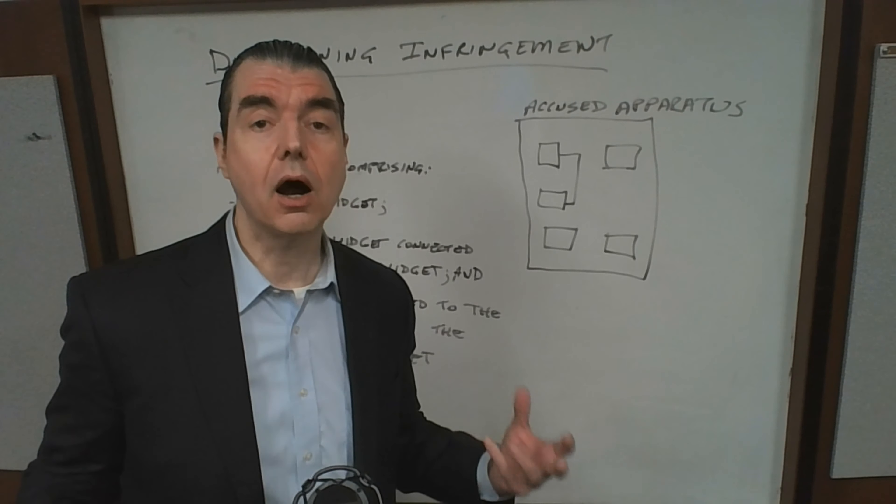If this box represents an accused apparatus of some sort, and the small boxes within the larger box are components of that accused apparatus, then we have to do an analysis and see if the claim reads upon the accused apparatus. The legal language is that the claim has to read upon — the limitations have to read upon an aspect or component of the accused apparatus.